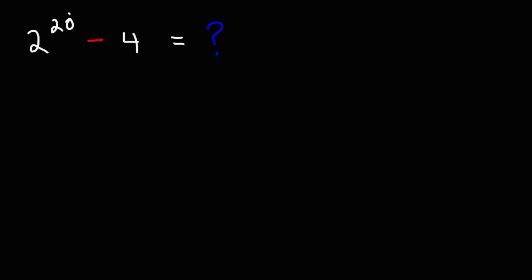Now one of the first things we need to do is adjust that expression 2 raised to the 20th power. We could use properties of exponents to do that. A raised to the m raised to the n is a to the m times n. So whenever you raise one exponent to another exponent, you need to multiply the two exponents. But we're going to go backwards.